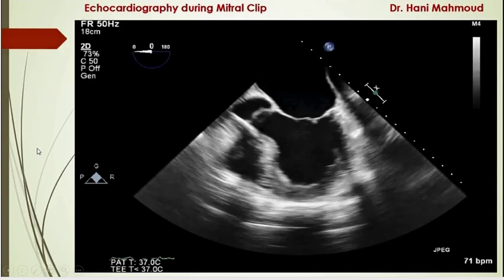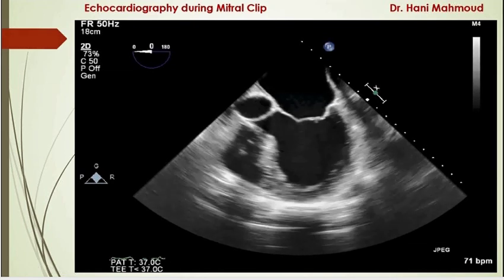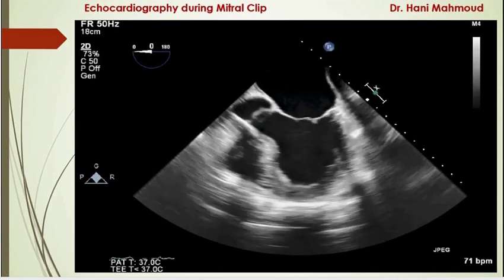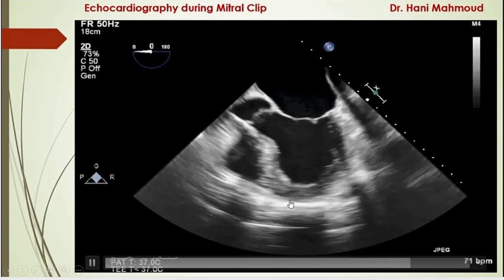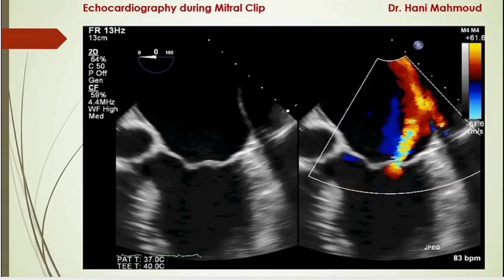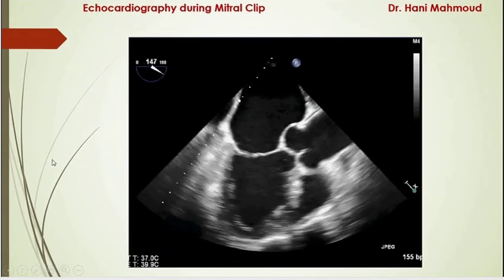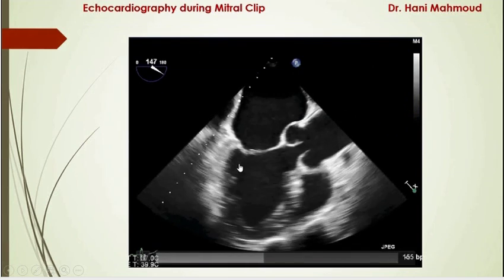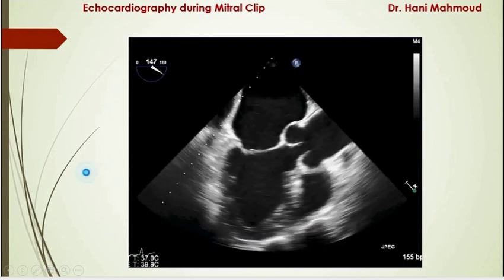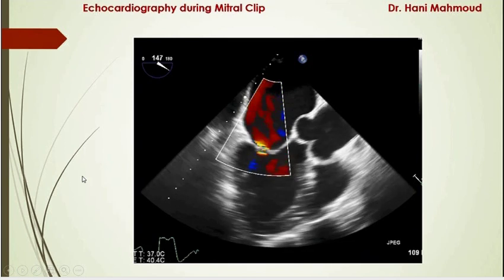The echocardiography role during clip procedures will start by taking some basic measurements like vena contracta, pulmonary vein reversal of flow during systole, and most importantly, we have to exclude the presence of a pericardial effusion. In this patient, we have a severe jet of eccentric MR. The mechanism of this MR was due to tethering of the posterior leaflet with some annular dilatation, producing an eccentrically posteriorly directed jet of severe MR.